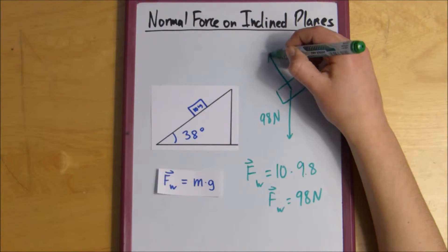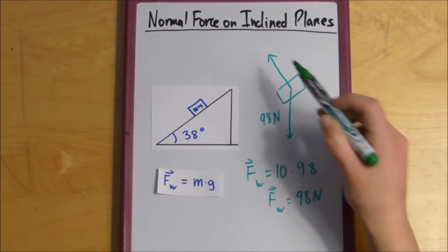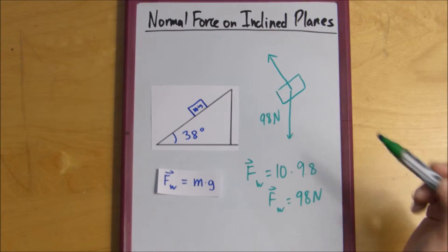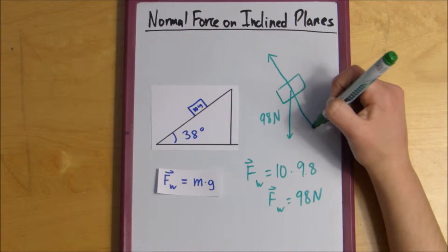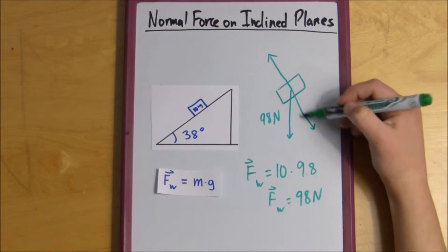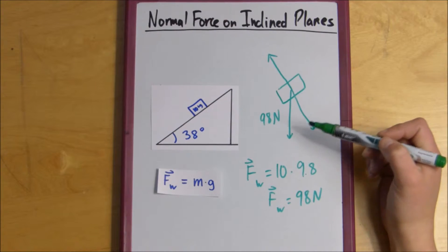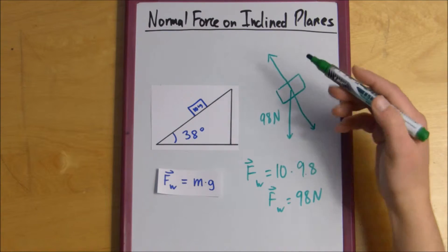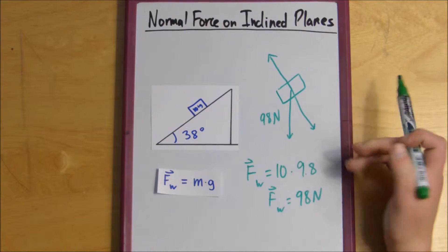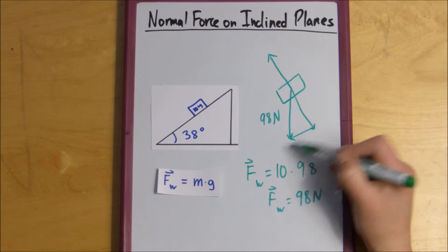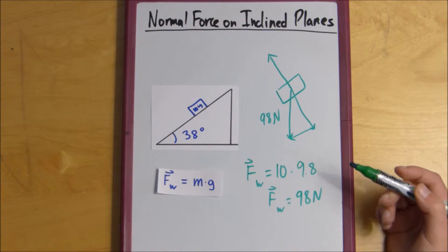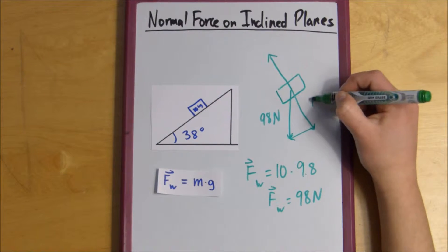So perpendicular from this surface would be going off like this. So that's what our normal force looks like. So what we can do is we can draw this normal force going the opposite direction so that we can find its magnitude. And this magnitude is going to be the same thing as this up here. We've just translated it down. And then we can complete this triangle by drawing another line here. So this is what we're trying to find, our normal force.